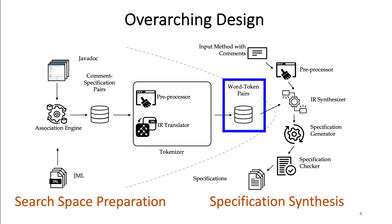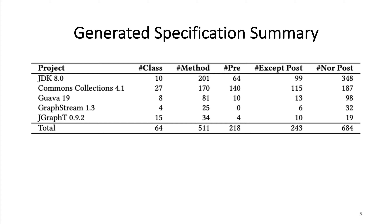The inputs of the second phase are a given method with comments and the word-token pairs. We extract all tokens that are associated with words in the given comment and generate specifications by assembling tokens based on syntax rules and the context of the target method. In total, we can generate 1,145 specifications for five projects.